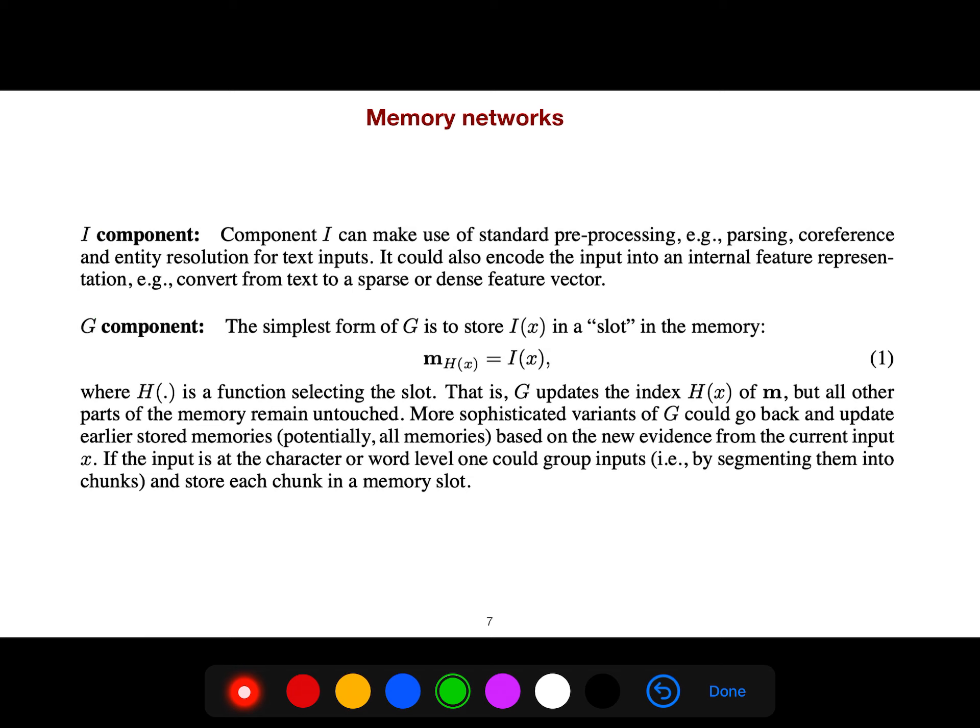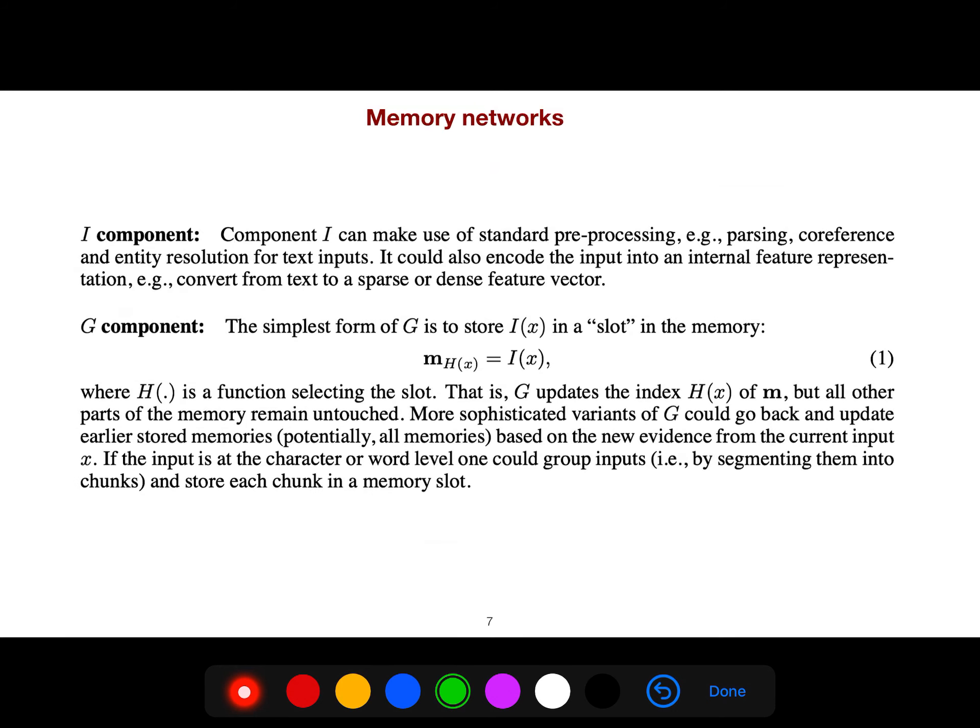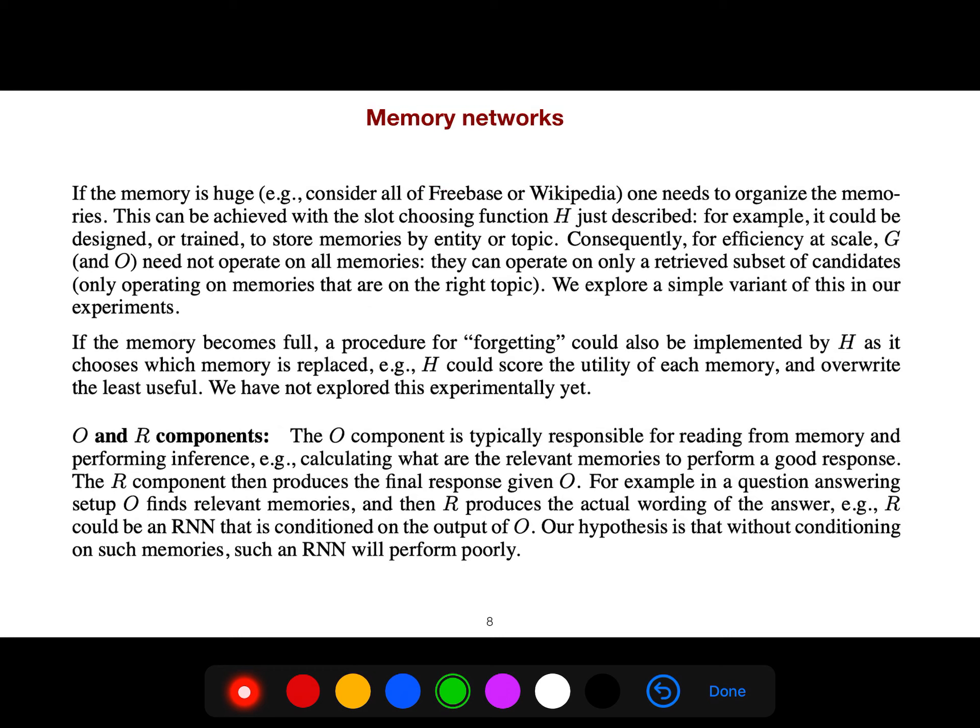For the G component, they can use just a slot in memory. If the memory is huge like the Freebase knowledge base or Wikipedia, one needs to organize the memories. This can be achieved with a slot choosing function, selecting which slot should be selected. For example, it could be designed or trained to store memories by entity or topic.